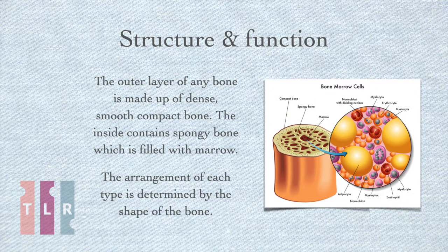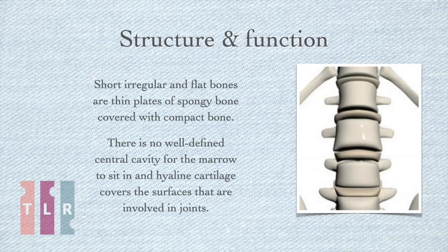The outer layer of any bone is made up of dense, smooth, compact bone. The inside contains spongy bone, which is filled with marrow. The arrangement of each type is determined by the shape of the bone. Short, irregular and flat bones are thin plates of spongy bone covered with compact bone. There is no well-defined central cavity for the marrow to sit in, and hyaline cartilage covers the surfaces involved in joints.